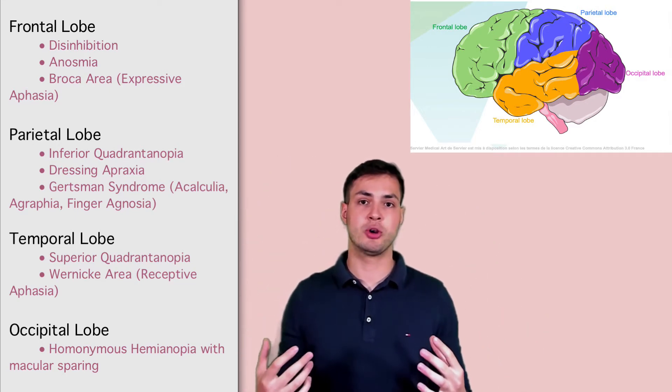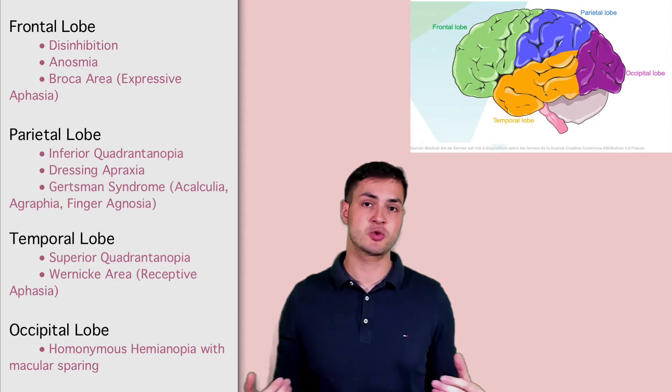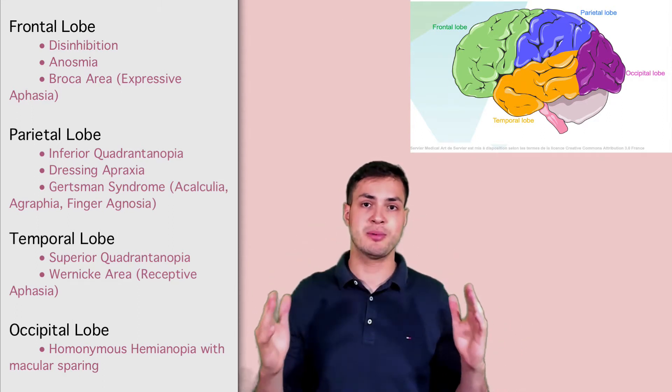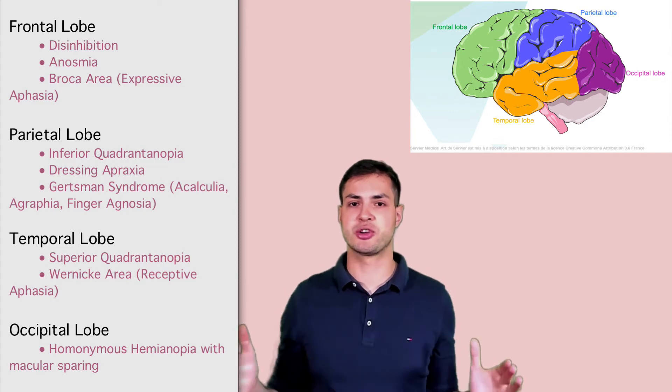Now, if you move on to the temporal lobe, the temporal lobe produces a homonymous superior quadrantinopia because the temporal lobes sit below and it happens opposite. So it produces a superior quadrantinopia.